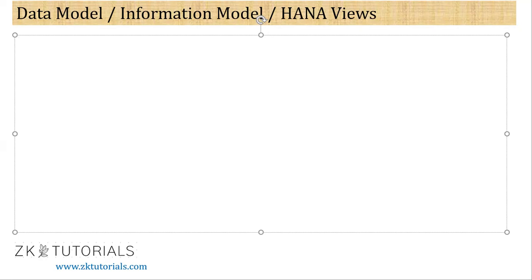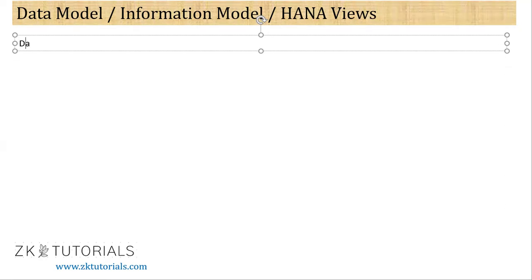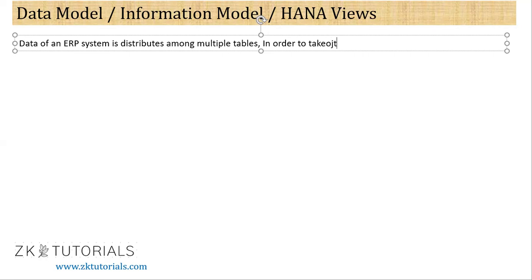In order to take out some meaningful results from HANA, we need to combine these tables together. As a technical consultant, we can write reports with complex SQL. The data of an ERP system is distributed among multiple tables - for example, VBAK, VBAP, VBARP. Similarly, tables like MARA, MAKD - if I want to display a report showing material with description and storage location, a developer needs to write a report that fetches data from all those tables.